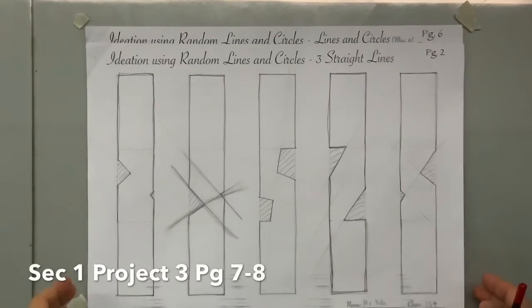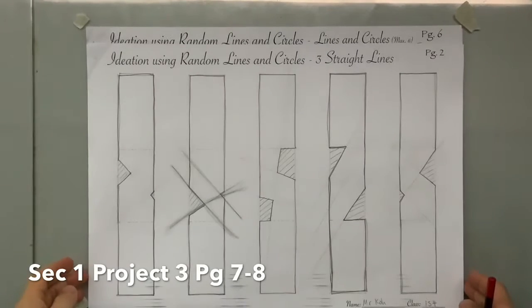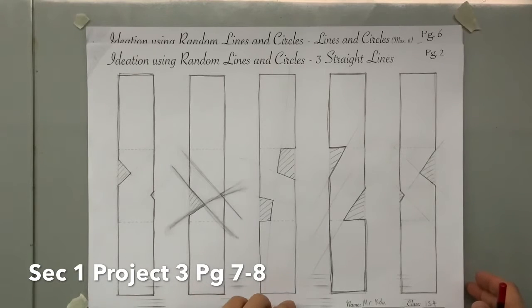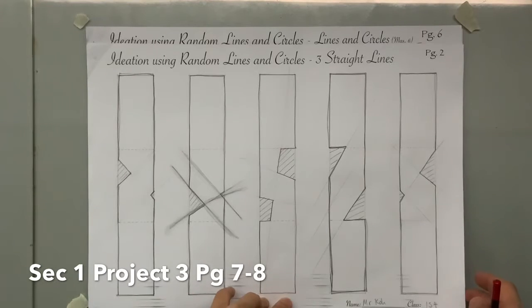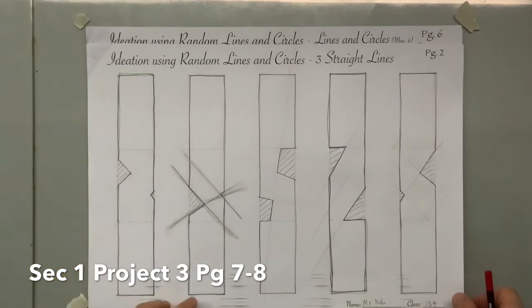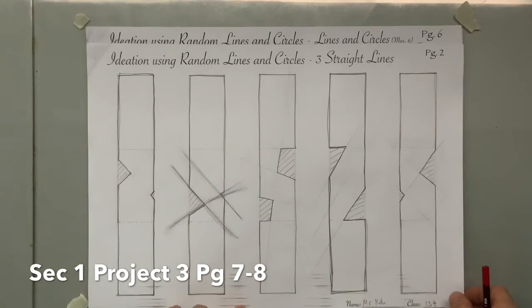In the previous video I showed you how to ideate using random lines and circles, using straight lines from page two to page six — lines and circles. If you have not watched that video, please go back and watch it and complete the exercise before we proceed.